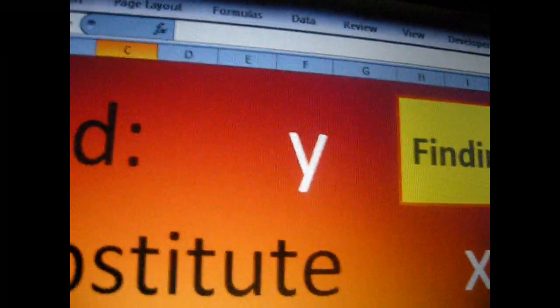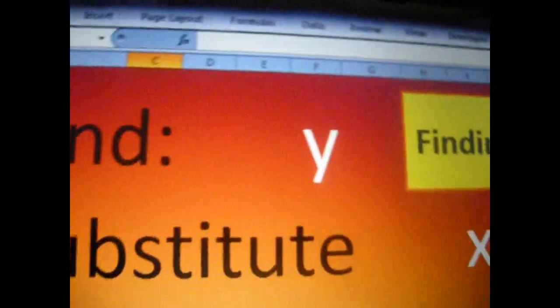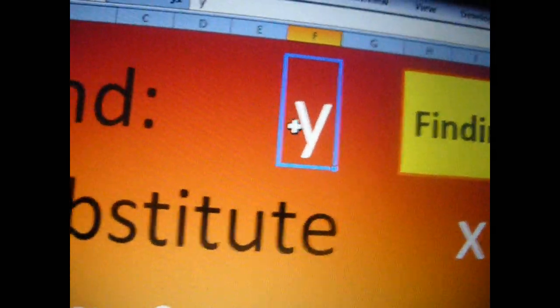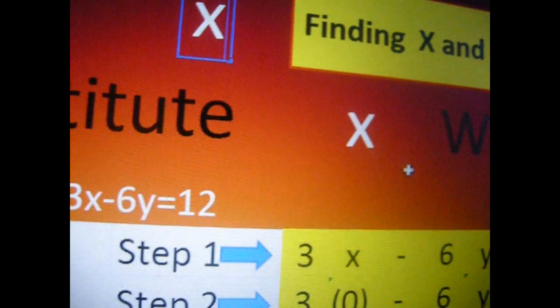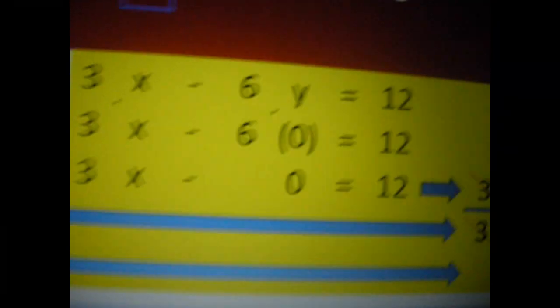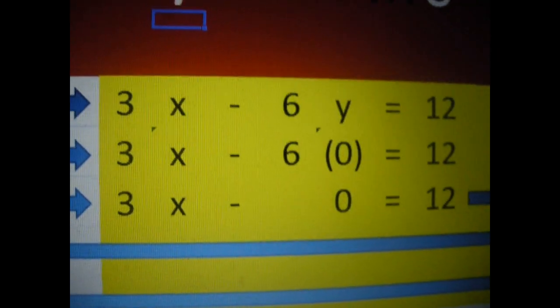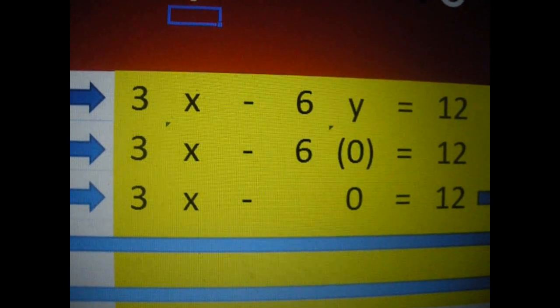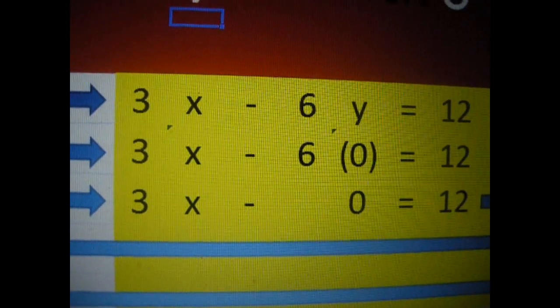Let's go ahead and change these with the same equation. Let's change this. We want to find X, so we substitute Y for 0. Now as you can see, it's changed it where it got rid of Y and left X, so we can find X.